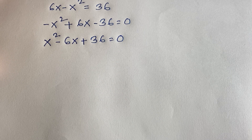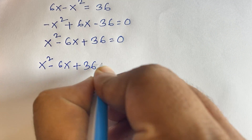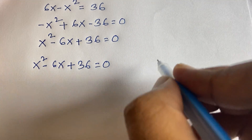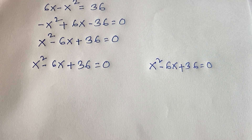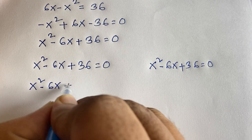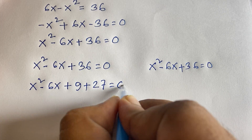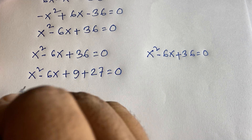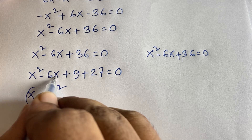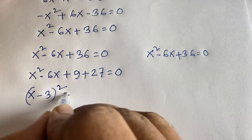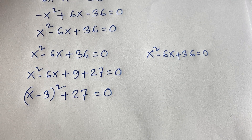This is a quadratic equation and I'll solve it two ways. For the first method: x squared minus 6x plus 36 equals 0. I rewrite 36 as 9 plus 27, so it becomes x squared minus 6x plus 9 plus 27 equals 0. Here x squared minus 6x plus 9 is (x minus 3) squared, using the identity (a minus b) squared equals a squared minus 2ab plus b squared, where b equals 3.